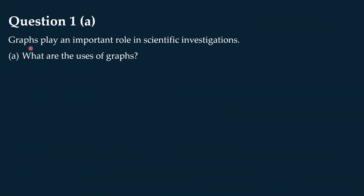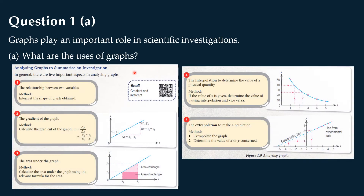Question 1a: Graphs play an important role in scientific investigations. What are the uses of graphs? In the textbook page 12, there is a discussion about analyzing graphs to summarize scientific investigations. The book lists down five ways to analyze a graph, and these are also the uses of graphs. Let's go into the details of each of these uses one by one.